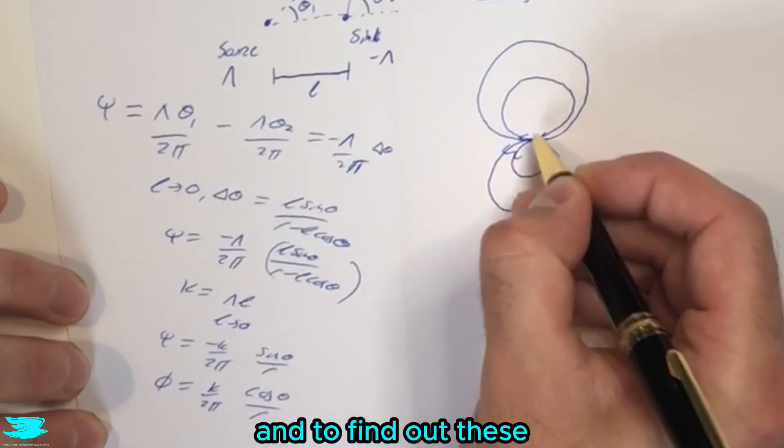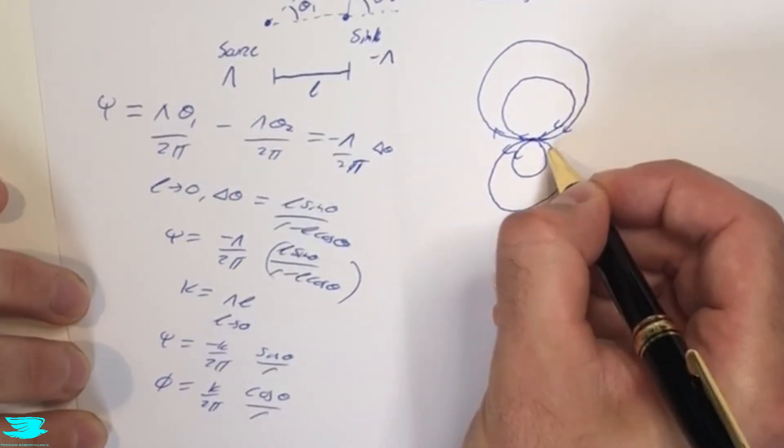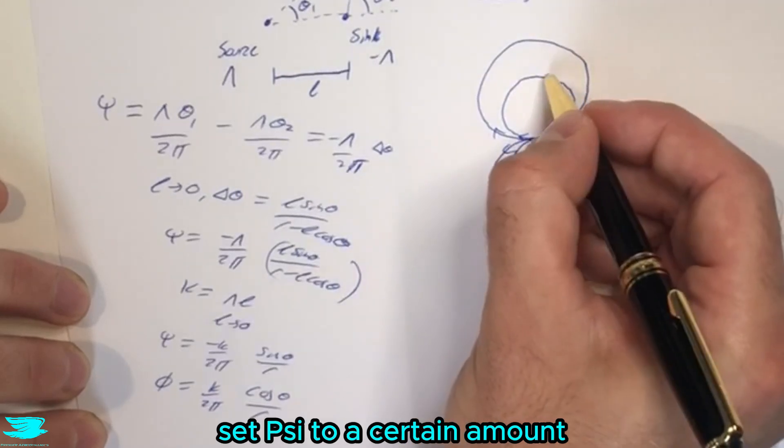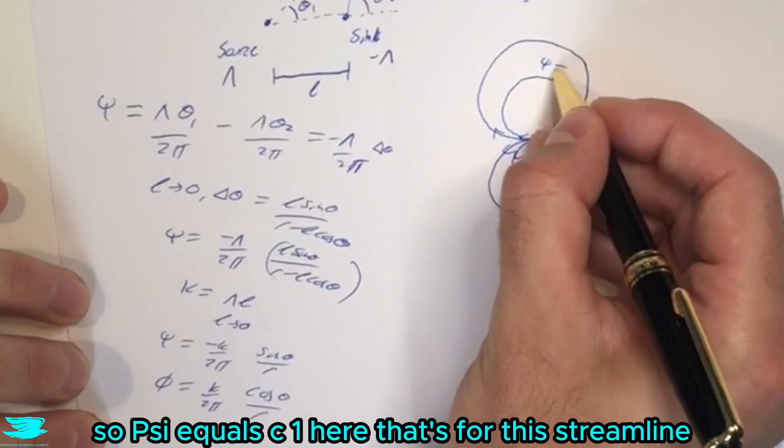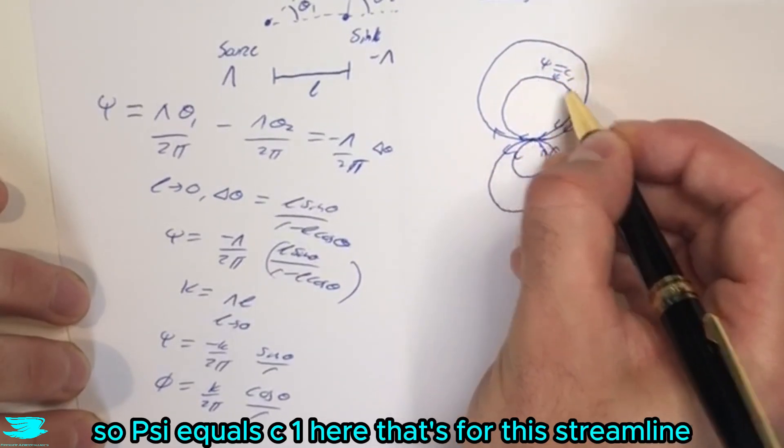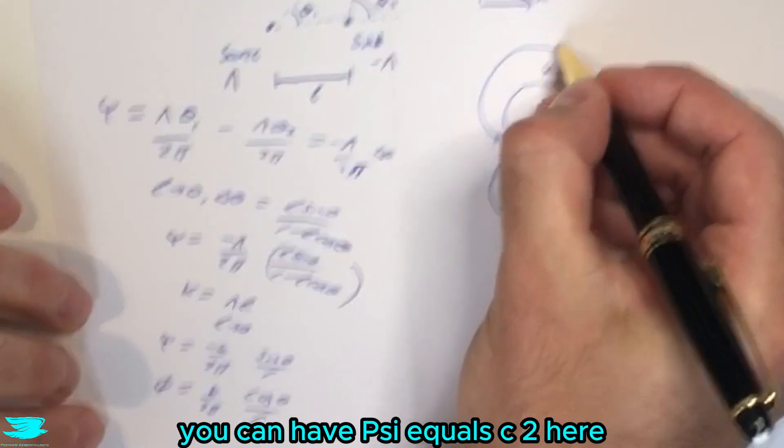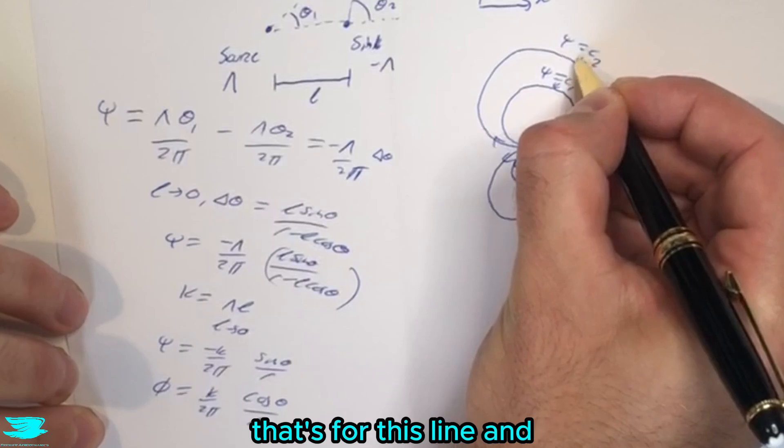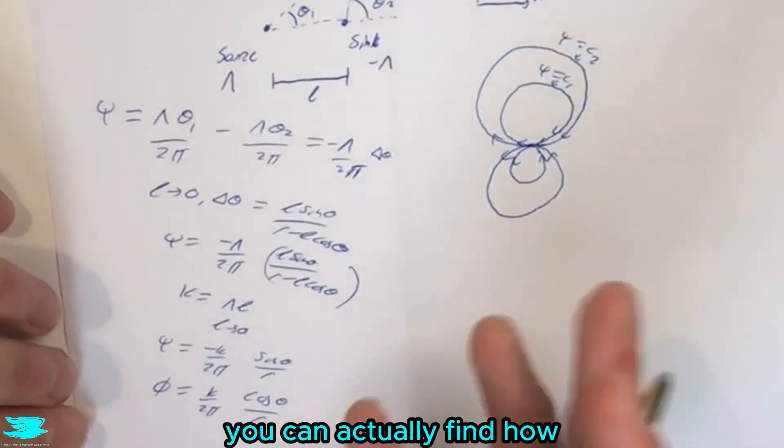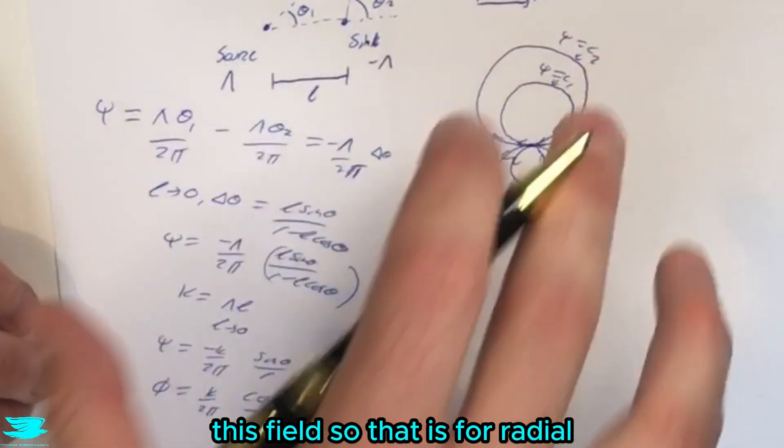And to find out these streamlines, you then just set psi to a certain amount. So psi equals C1 here, that's for this streamline. So you can say it's five or whatever, and then differentiate this to find out where it was happening. You can have psi equals C2 here, that's for this line, and so on and so forth. So you can actually find how the streamlines are moving in this field.